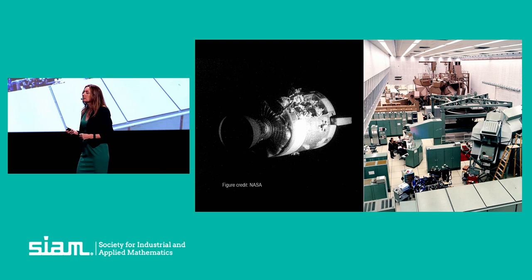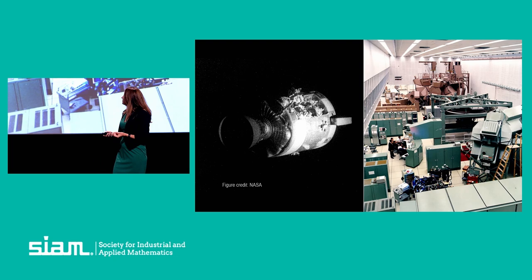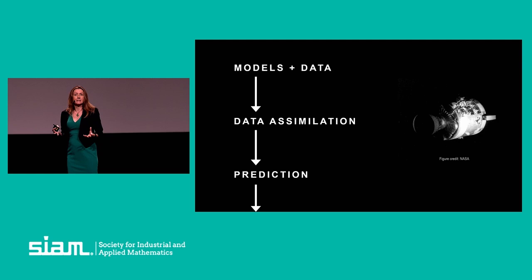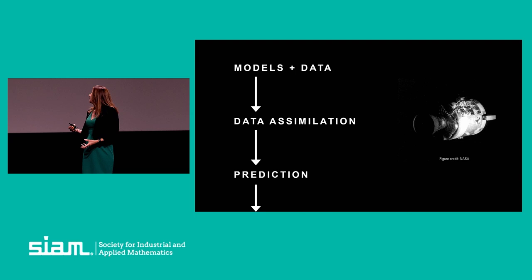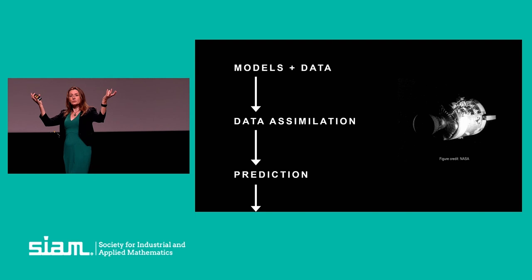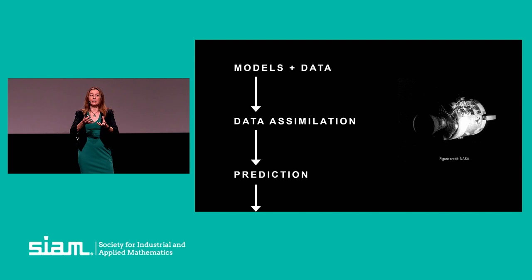They were able to use that dynamically adapted simulator to run scenarios, play the what-if questions, and inform the decisions that ultimately brought the astronauts back home safely. Think about the different elements in that story. First, there were models — a physical simulator on the ground in Houston. Then there were data, collected from sensing systems on board the spacecraft and from observations the astronauts were making. When those two things were put together, that process is mathematically known as data assimilation.